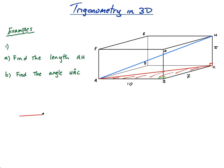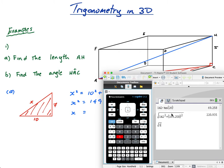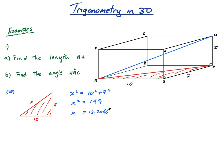So I'm going to draw these triangles separately. This length is 10 and this length is 7 — let's call the red diagonal x. This is my red shaded triangle. Using Pythagoras' theorem for Part A: x² = 10² + 7² = 100 + 49 = 149. So x = √149 = 12.2066.